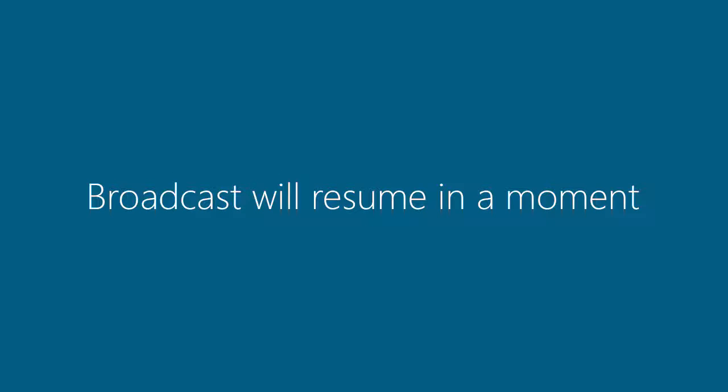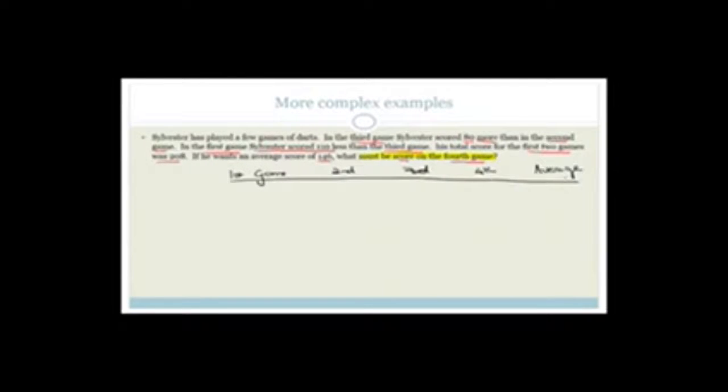So the best way to do this is actually to make a little table and see what we have and what we don't have. So we've got first game, second game, third game, fourth game, and then average. And you agree that the average, to get the average, what do we need to do? We have to add all of these and then divide by four. So we know that the average already they've told us is 146. And again, what I'd like to suggest you do is that you maybe tick off in pencil the stuff that you use, the information that you've used so that you can actually work out where you're going.